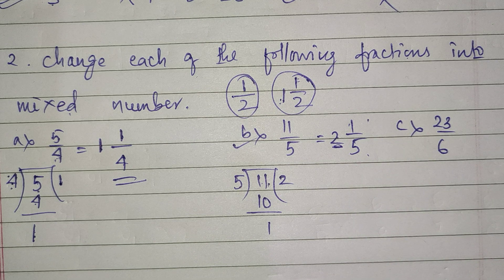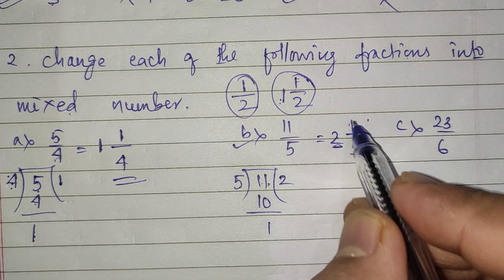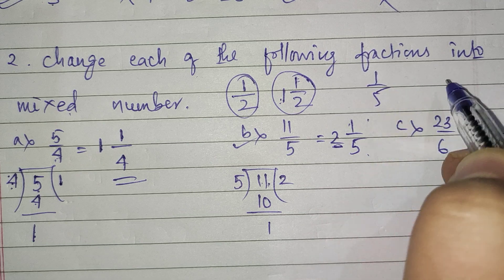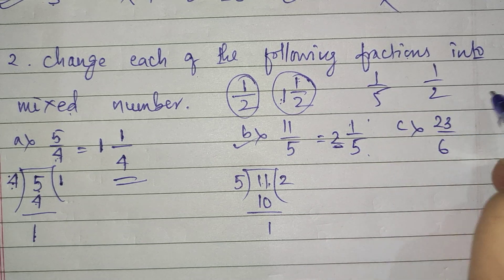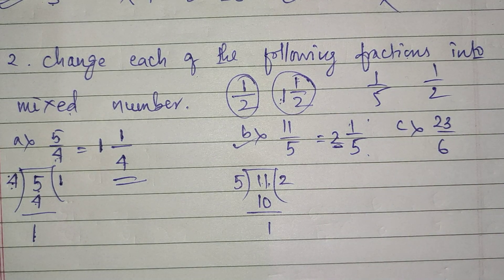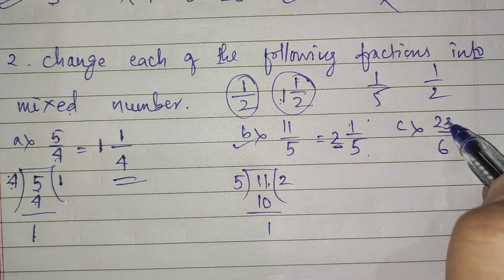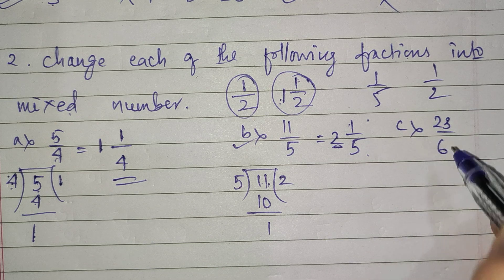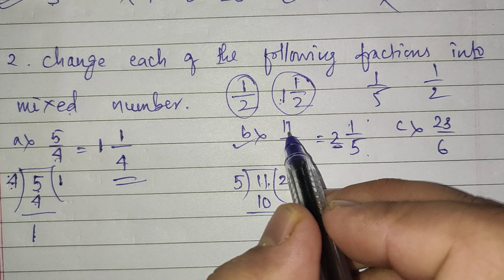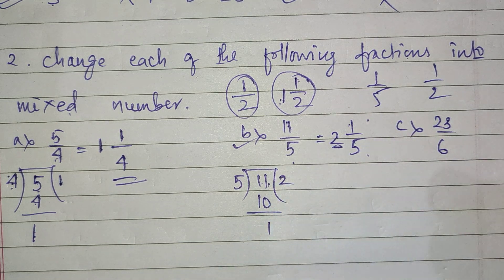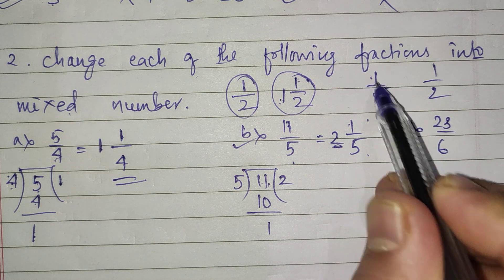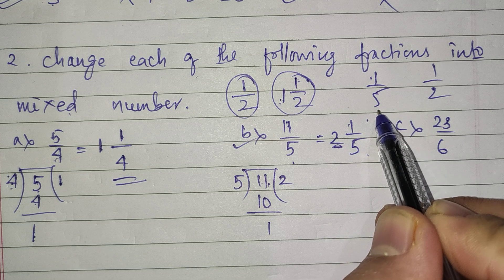A proper fraction is one like 1 by 5 or 1 by 2, where the numerator is smaller than the denominator. An improper fraction, like 23 by 6 or 11 by 5, is one in which the numerator is greater than the denominator.